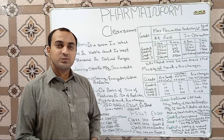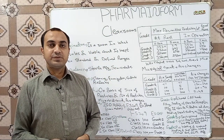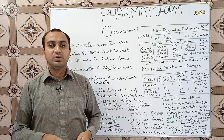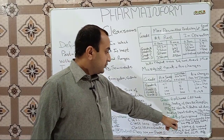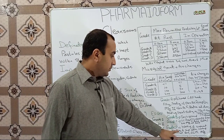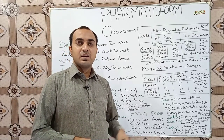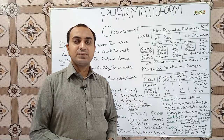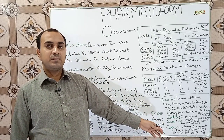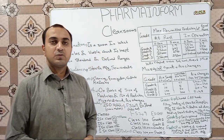Grade C, also known as ISO Class 7, is used for the manufacturing of solutions or sterile solutions which require terminal sterilization later on. Liquid manufacturing area at rest is also under Grade C. Grade D or ISO Class 8 is used for washing of components and for handling of components after washing. Oral solid dosage forms — meaning tablets, capsules — at rest are in Grade D, and oral liquid manufacturing area in operation is also Grade D.